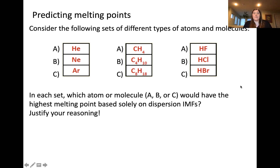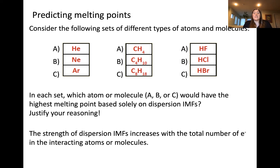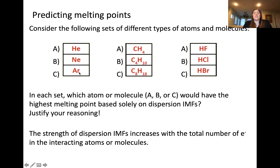Pause the video and think about it before continuing. The strength of intermolecular forces increases with the size of the atom or molecule. This is because of the surface area, effectively, that the electron clouds can interact over, which then controls the strength of the dispersion force. In the case of helium, neon, and argon, argon is the largest of these three atoms — we know that because of its molecular mass, which also corresponds to the number of electrons in the atom. Therefore, argon would be expected to have the strongest dispersion forces.